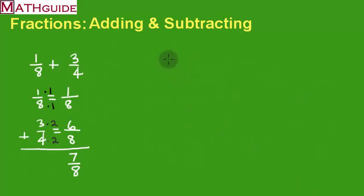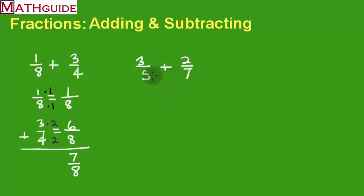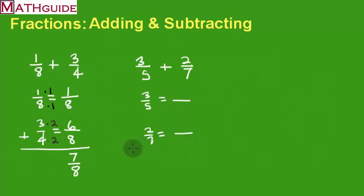Now let's take a look at the next example. Let's say we have 3 fifths and I want to add 2 sevenths. I'm going to add those two together. I'm still going to arrange this vertically, just like I did for the last problem, so that it's easier to see the common denominator. A lot of kids do this in school.